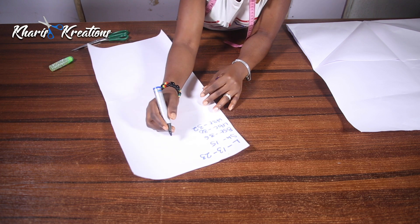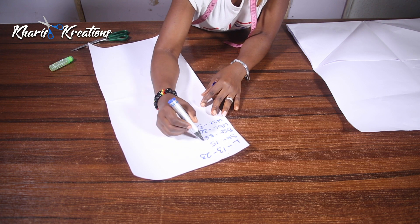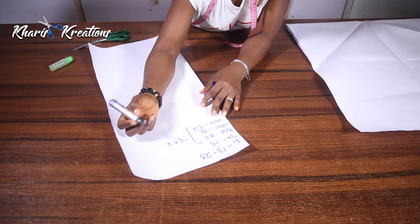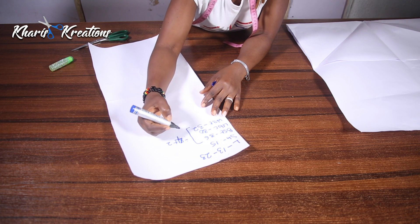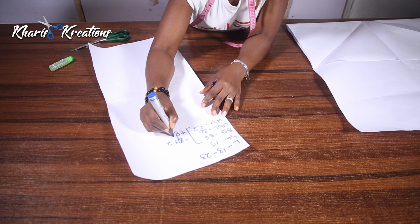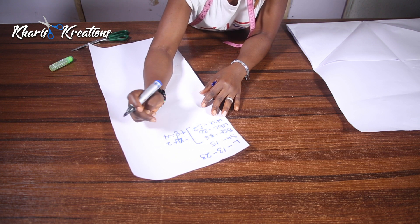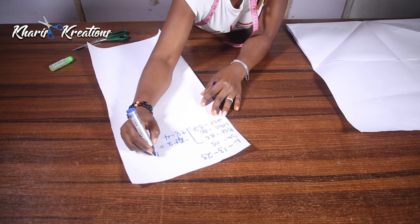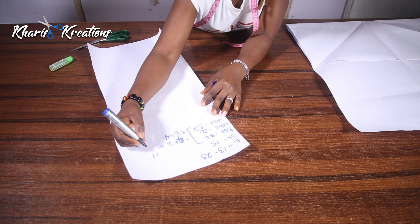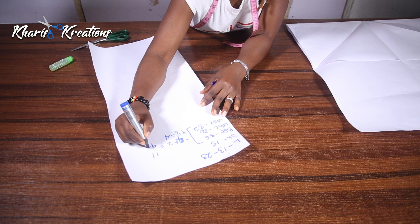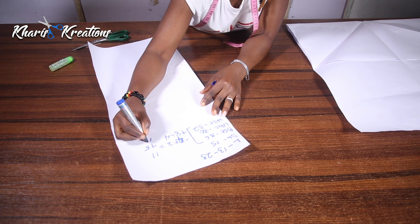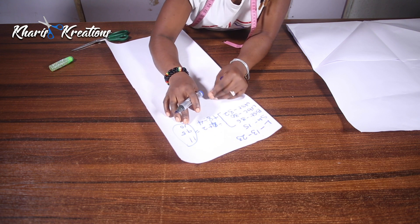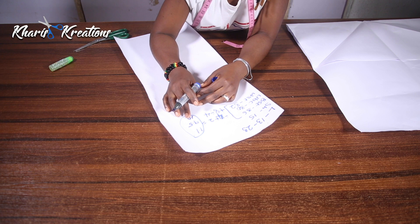Now, for all your circumference measurements — bust, underbust, and waist — you add 8 inches and divide by 4. You can also divide by 4 first and add 2; you get the same result. So: 36 plus 8 divided by 4 equals 11; 30 plus 8 divided by 4 equals 9.5; and 32 plus 8 equals 40, divided by 4 equals 10.